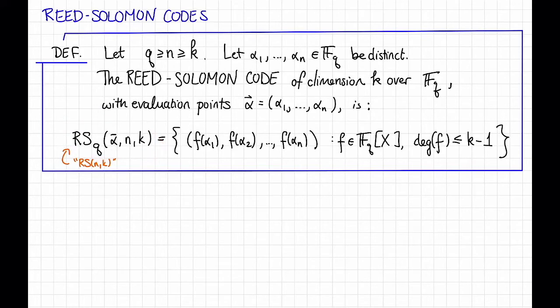And when α is clear from context, and Q is clear from context, I might just write RS(N,K). And this is defined as the following set. So it's the set of all vectors of the form F(α₁), F(α₂), dot dot dot, up to F(αₙ), where F is a polynomial over F_Q of degree at most K minus 1. So the Reed Solomon code of dimension K with evaluation points α is the set of all such vectors.